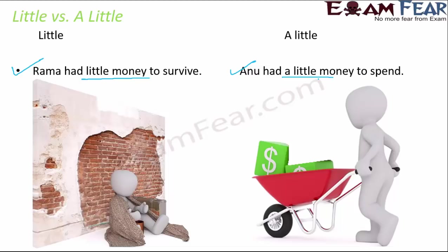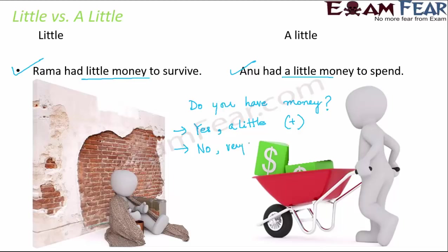Let's consider a situation. Someone asks you, 'Do you have money?' There are two ways to answer. If you have some money, you reply: 'Yes, a little' — meaning yes, I have some money, which is a positive reply. But if you almost have no money — very, very little — you would say: 'No, very little.' Notice you say 'no' because you almost have no money. So your response is not 'yes, very little' but 'no, very little.' Just observe the way we use these two words in conversation.